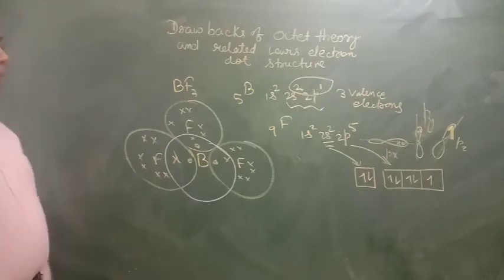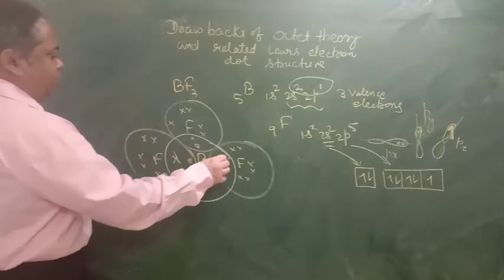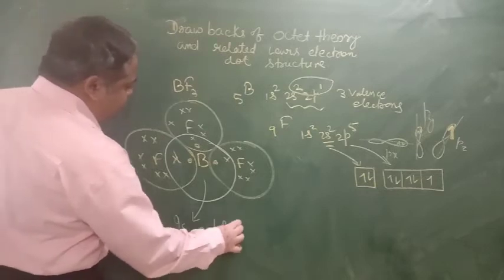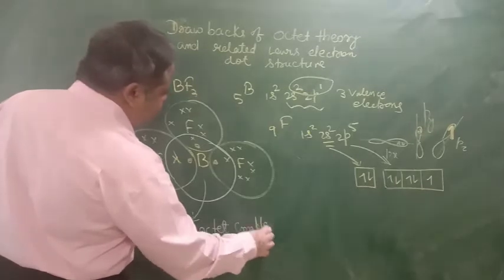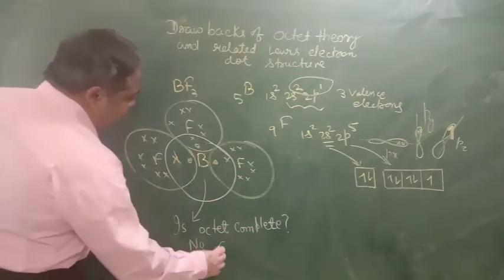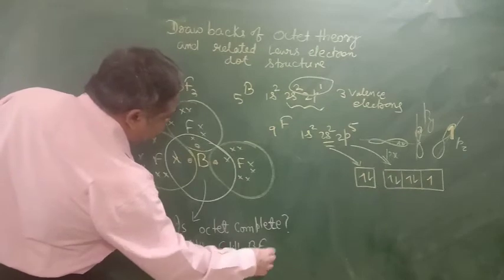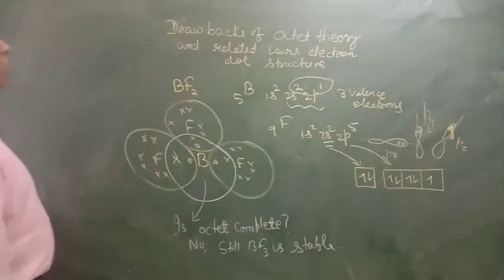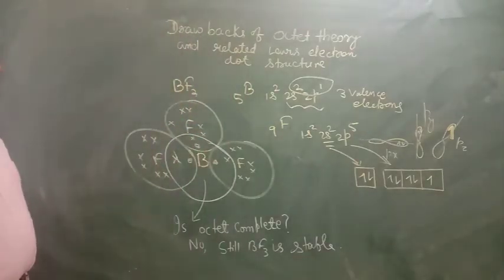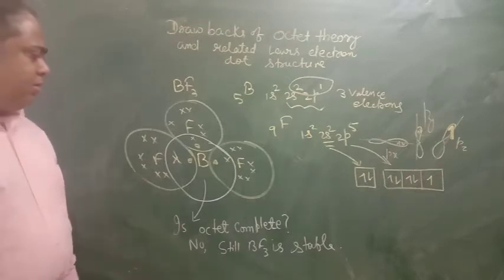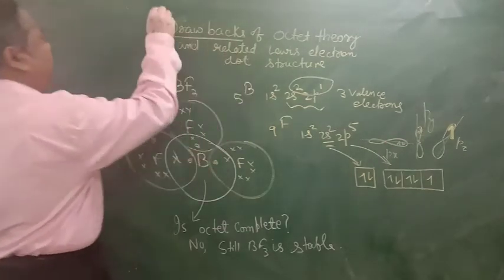So what do we see here? How many electrons are there around boron? 1, 2, 3, 4, 5, 6. Is octet complete? No. Still BF3 is a stable molecule. So this was one drawback, that an atom even after sharing the electron to complete octet may not have 8 electrons in the outermost shell and still they can be stable.